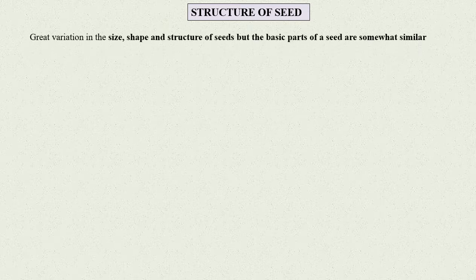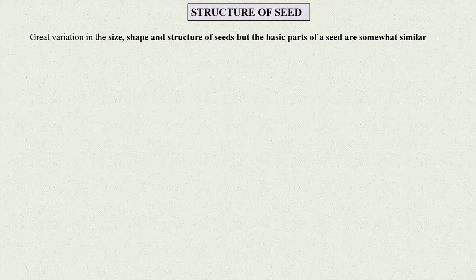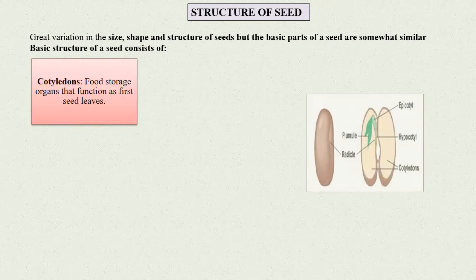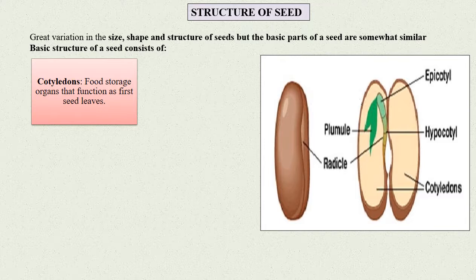Structure of seed: There is a great variation in size, shape, and structure of seeds, but the basic parts of seeds are somewhat similar. The basic structure of seed consists of cotyledons, which are food storage organs that function as first seed leaves.